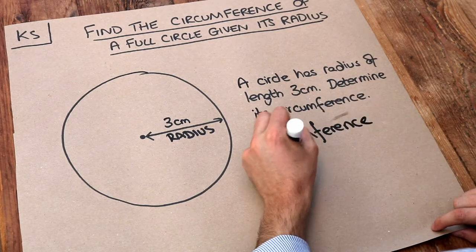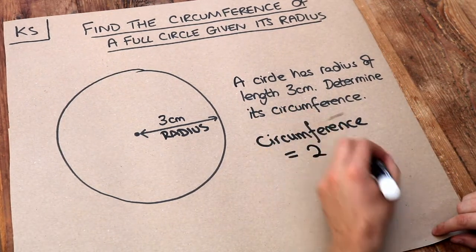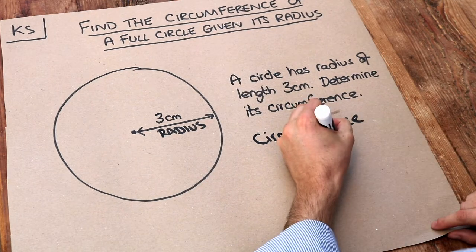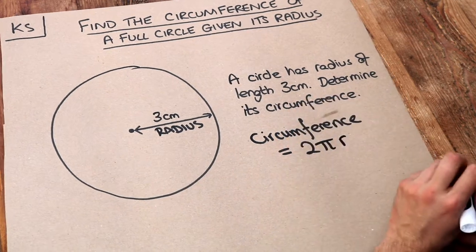And it's this. It's just 2 times by pi, and I'll explain what pi means in a second, multiplied by the radius r.